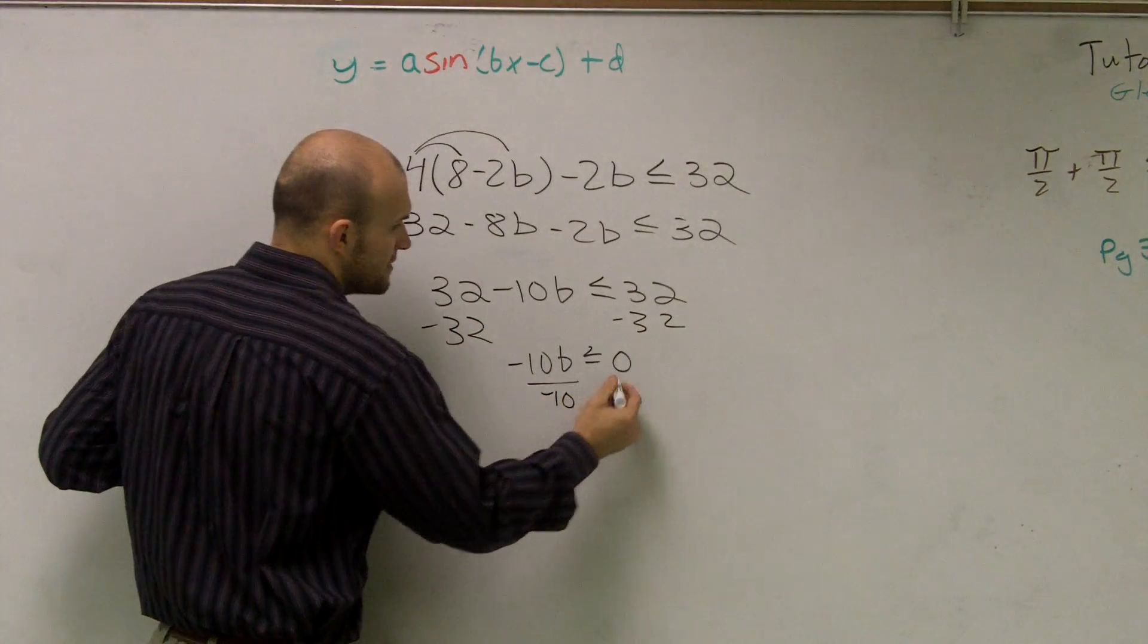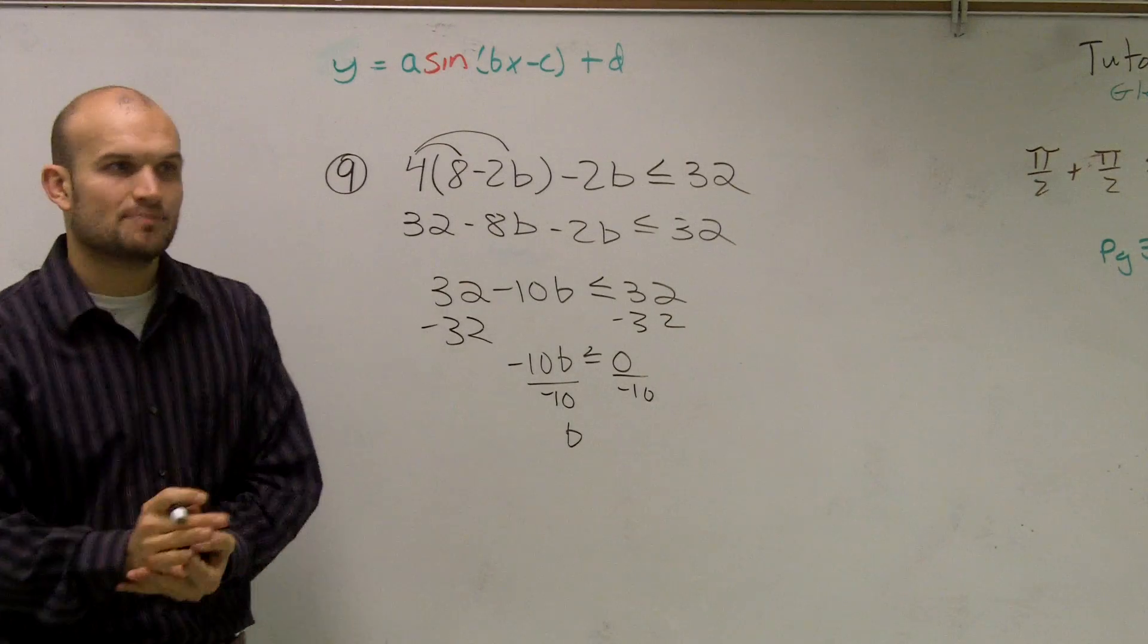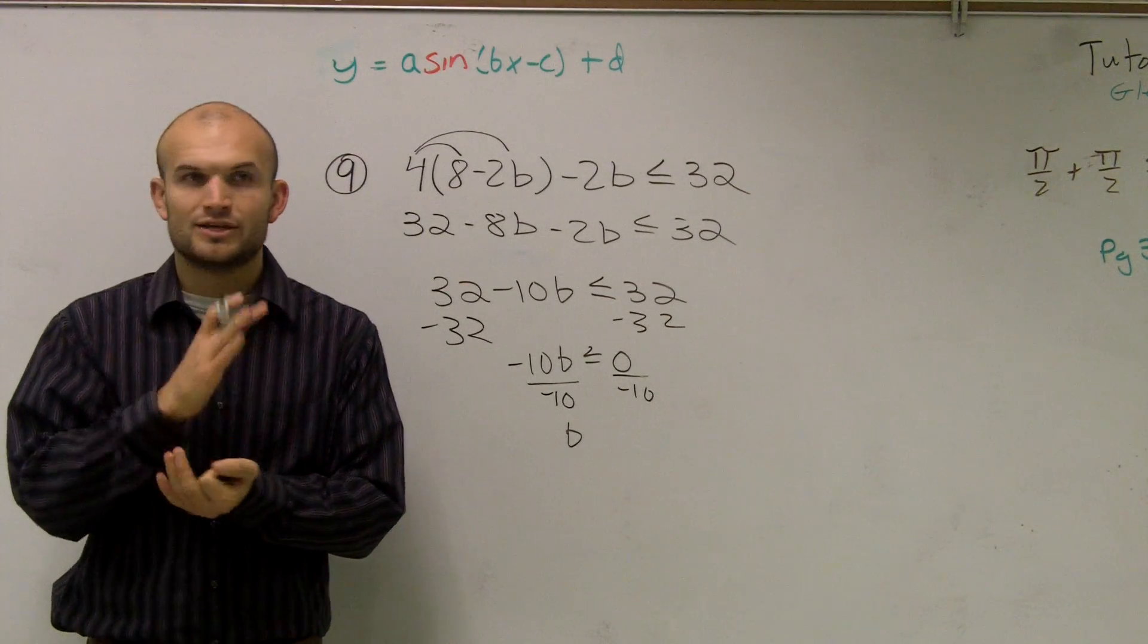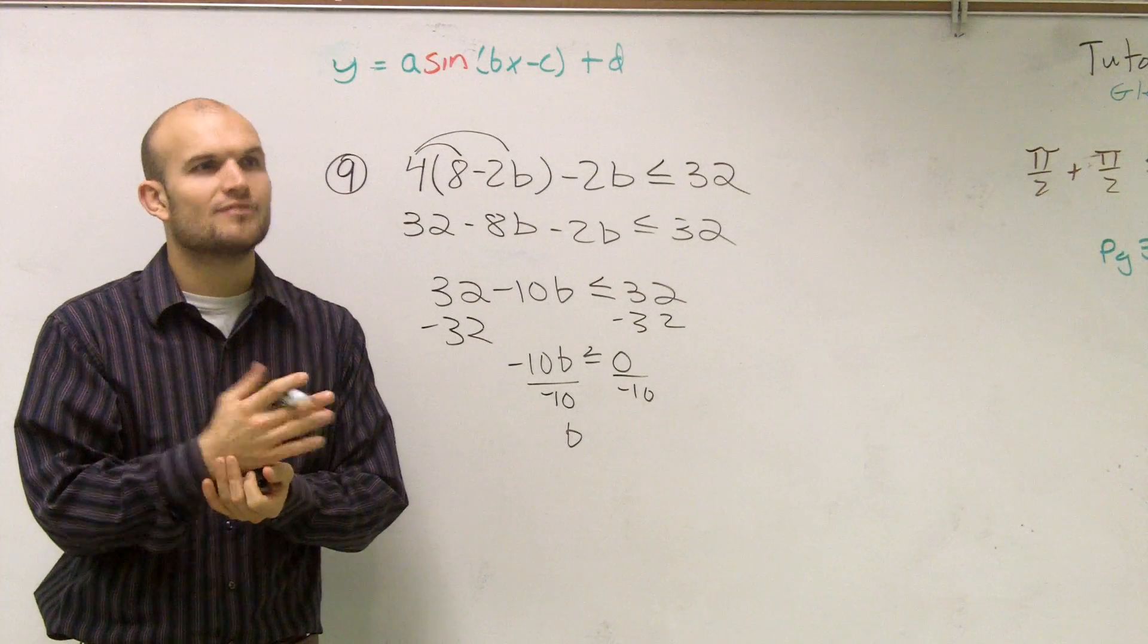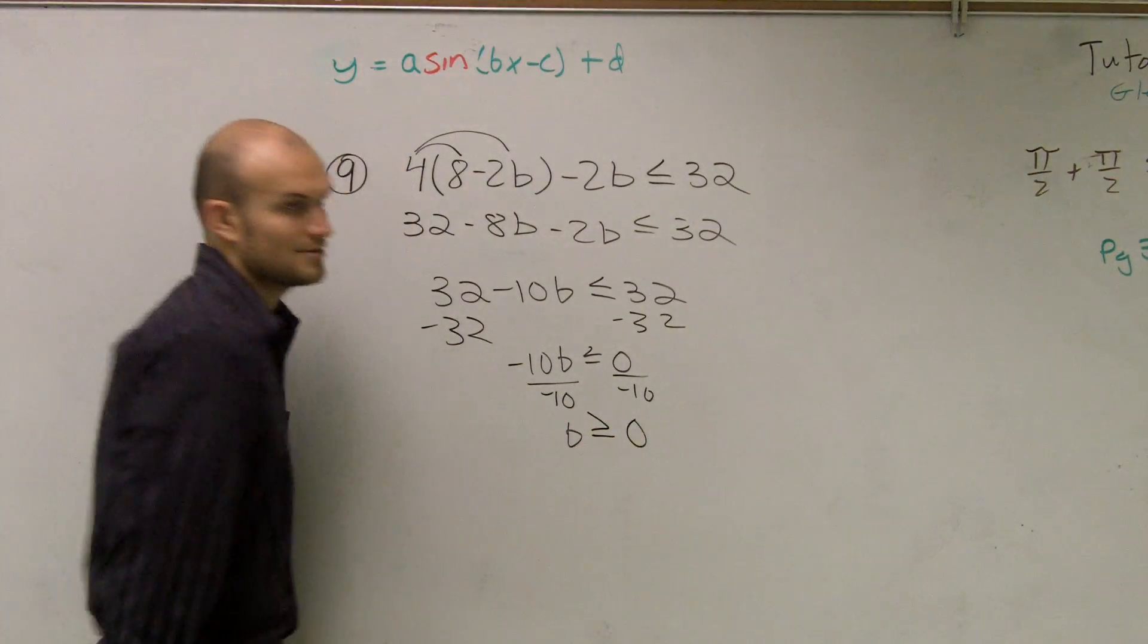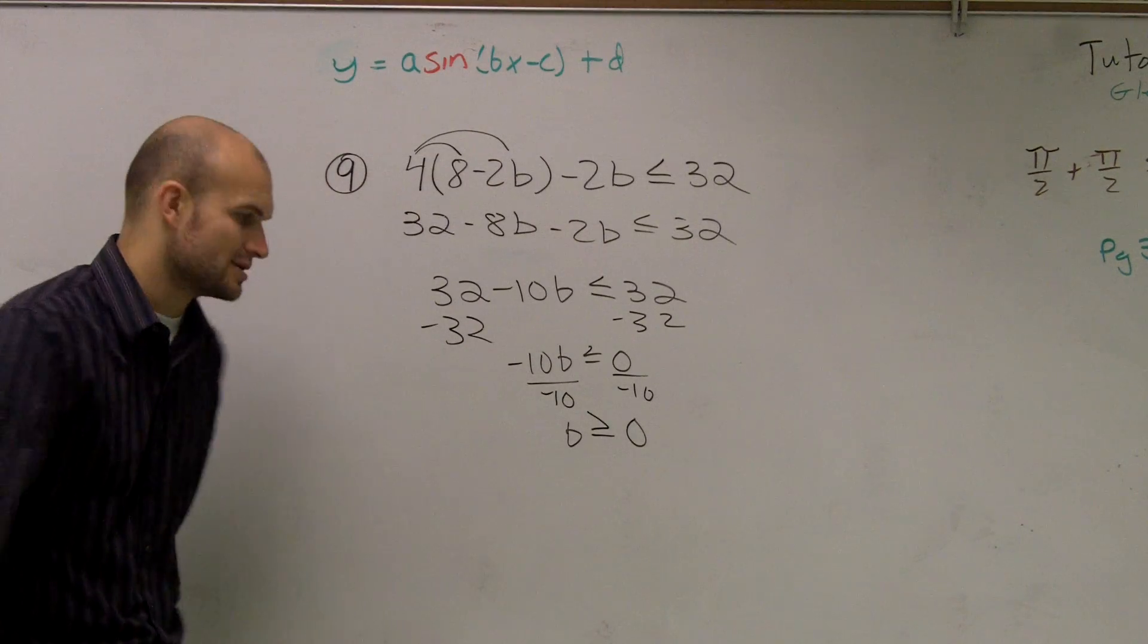And the most important thing you need to remember is whenever you multiply or divide by a negative number, we flip the sign. What do we do? We flip the sign. You're going to make sure the sign is in the other direction.